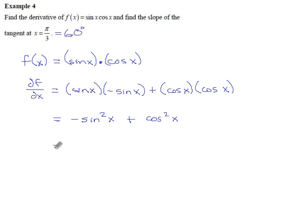So what we have here is minus the sine of 60 all squared plus the cosine of 60 all squared.